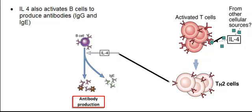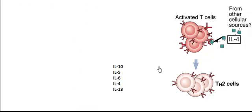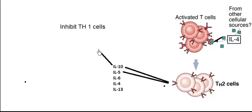In addition to interleukin 4, T helper 2 cells also produce interleukin 10, interleukin 5, interleukin 6, and interleukin 13. Interleukin 10 in turn will inhibit the production of T helper 1 cells. So the product of T helper 2 cells inhibits the activity of T helper 1 cells, and earlier we saw that the product of T helper 1 cells inhibits the activity of T helper 2 cells — showing mutual inhibition.